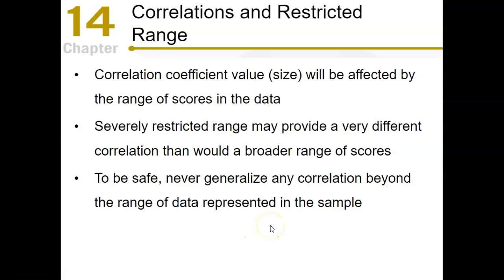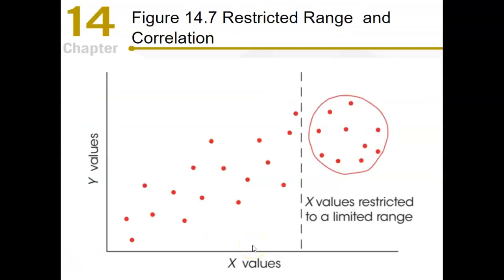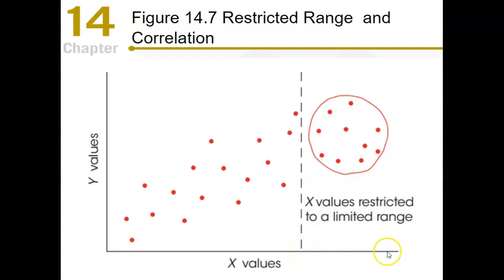Another consideration when interpreting correlations is restricted range. If we're working with just a restricted range of data, we have to be careful about what we can conclude — we can only make conclusions about the range of data we're looking at. For example, looking at a full dataset might reveal a positive linear relationship, but looking at only a restricted portion might make it appear there's no relationship at all.